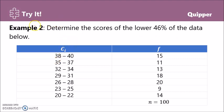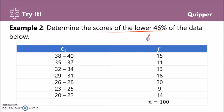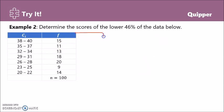Let's have another example. Determine the scores of the lower 46% of the data below. We have a frequency distribution table and the less than cumulative frequency is not given. It asks for scores lower than 46%, meaning we are looking for P sub 46. The meaning of P sub 46 is that 46% of the scores are lower than this value, and 54% are greater than P sub 46. So, just like example 1, we are going to construct the less than cumulative frequency.